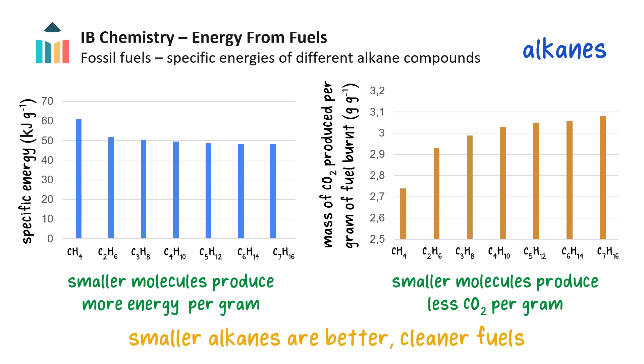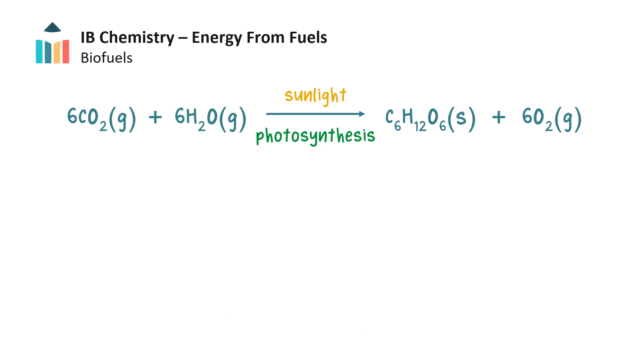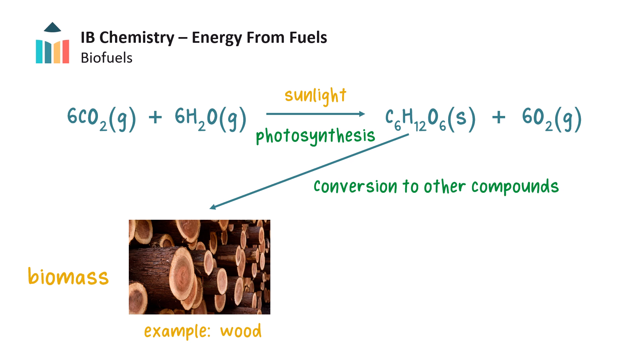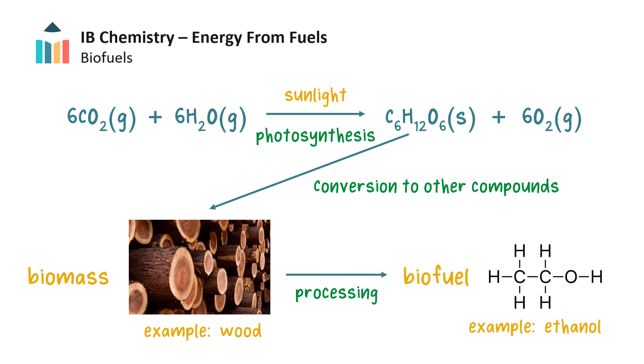Now let's turn our attention to another type of fuel called a biofuel. We said earlier that photosynthesis uses energy from sunlight to fix carbon from carbon dioxide in the air into glucose in plants. The glucose produced can be converted to other compounds to produce biomass useful as fuel, for example wood. We can harness the energy in plant matter by converting the sugars in biomass to a fuel called a biofuel. Biofuels include ethanol, methanol, biodiesel, and methane.